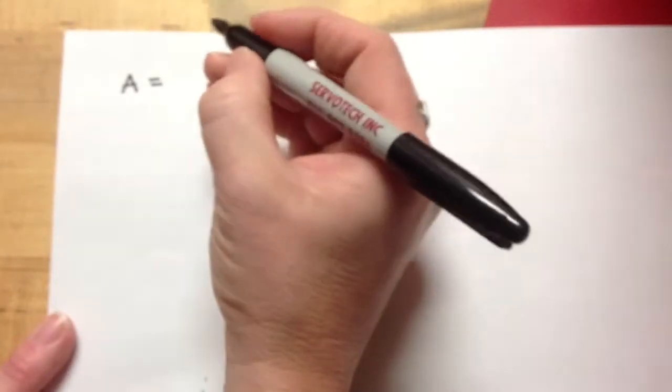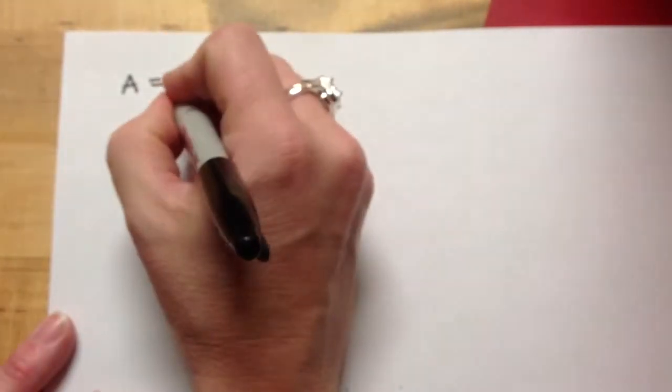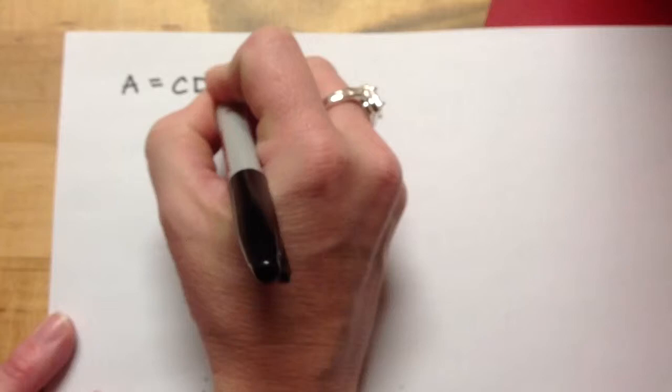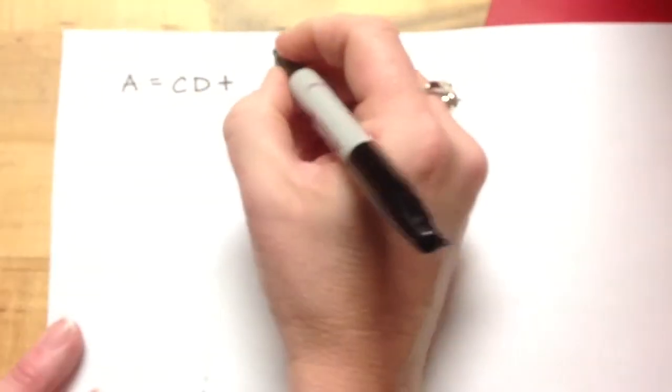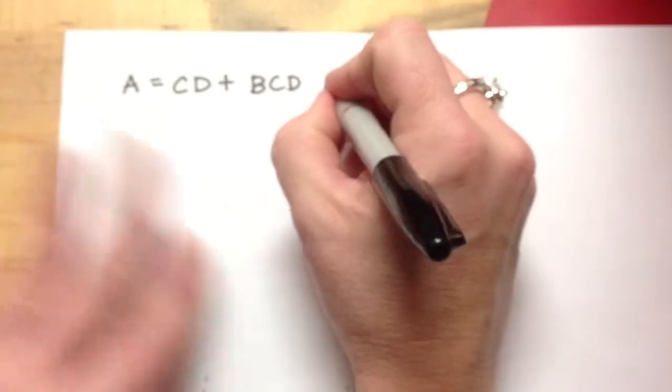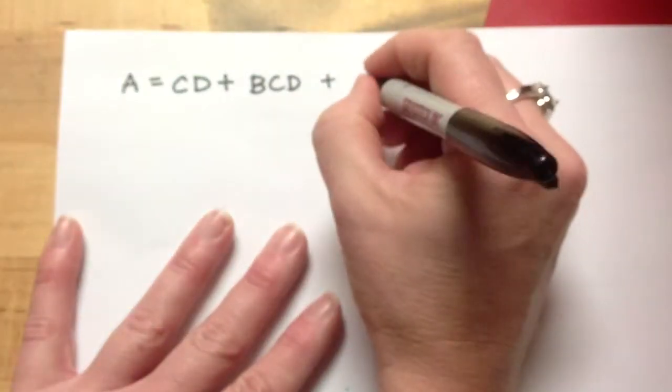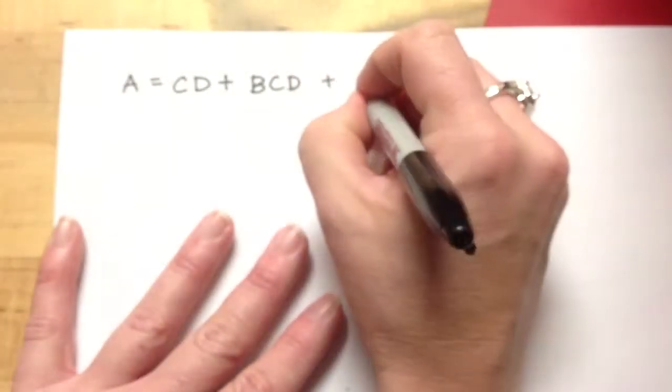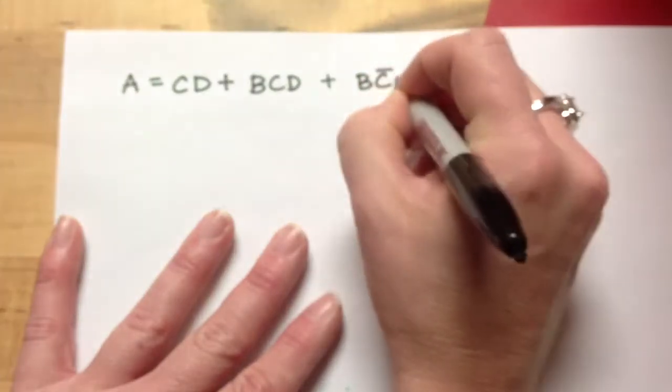All right, so let's do this again. I'd like you to do another practice problem. Here I'm going to say A is equal to CD or BCD or B, not CD.